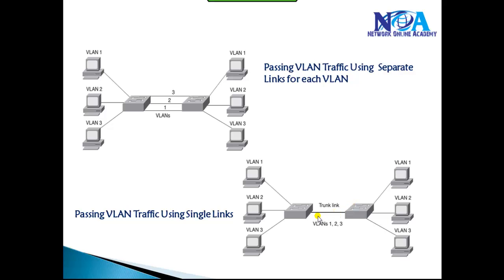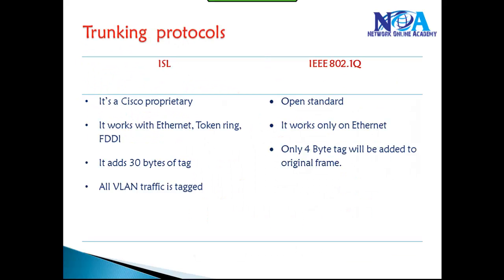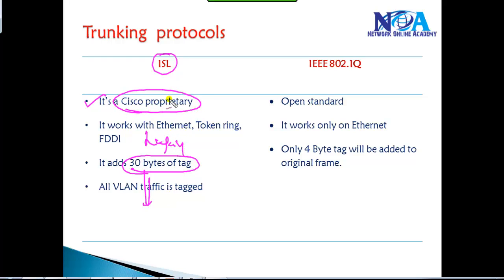Trunking also notifies the remote switch about VLAN membership, and this happens only on trunk links. This process is done by two protocols. Initially ISL — Inter-Switch Link — was a Cisco proprietary protocol, but it's a legacy method no longer supported on most Cisco platforms. The major disadvantage is that it adds 30 bytes of tag overhead on the switches, and being proprietary it only works when using Cisco on both sides.